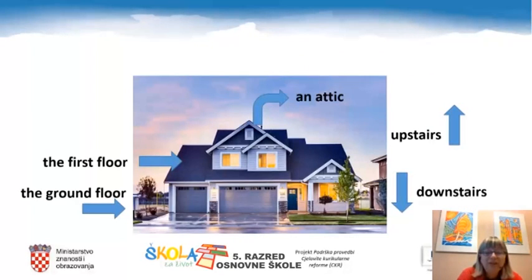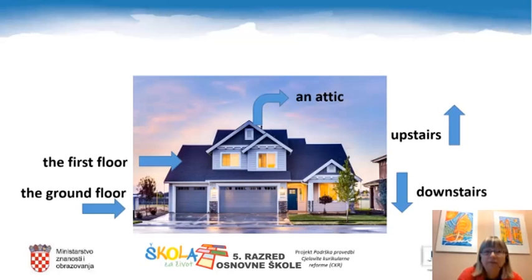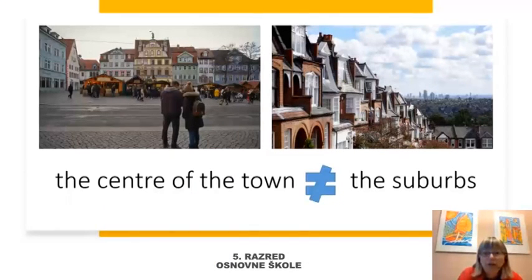Let's have a look at this house. As you can see, downstairs there is the ground floor — prizemlje. Upstairs, there is the first floor — prvi kat — as well as an attic — tavan. Not to forget, people can also live in the centre of the town or in the suburbs — u predgrađu.